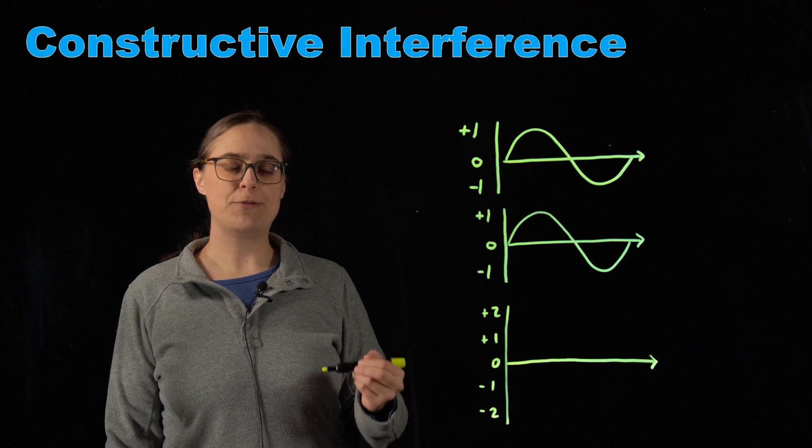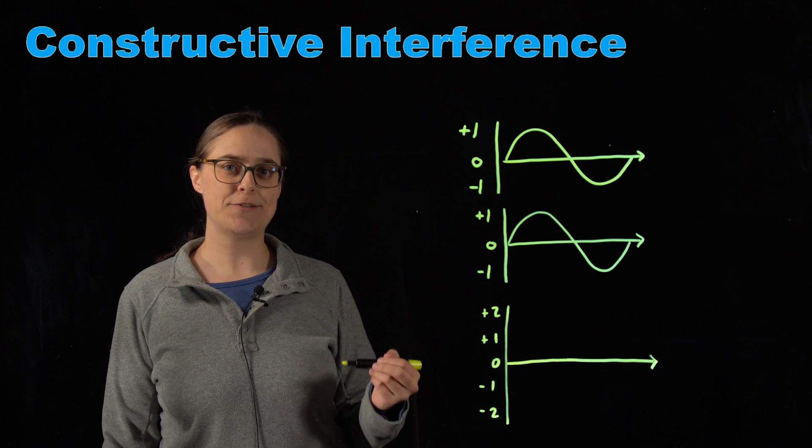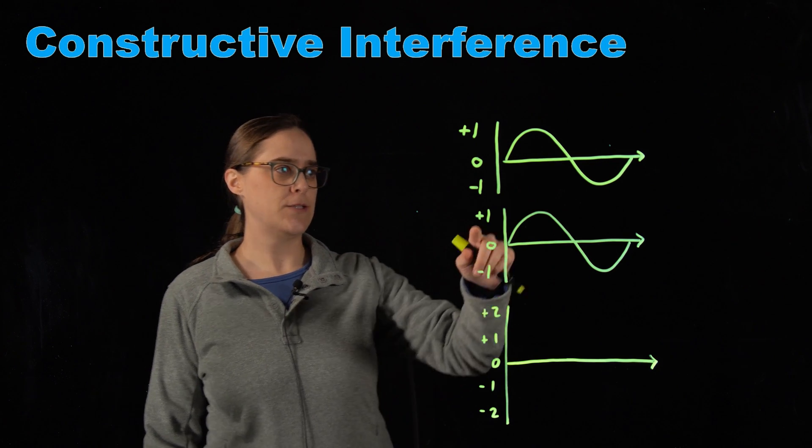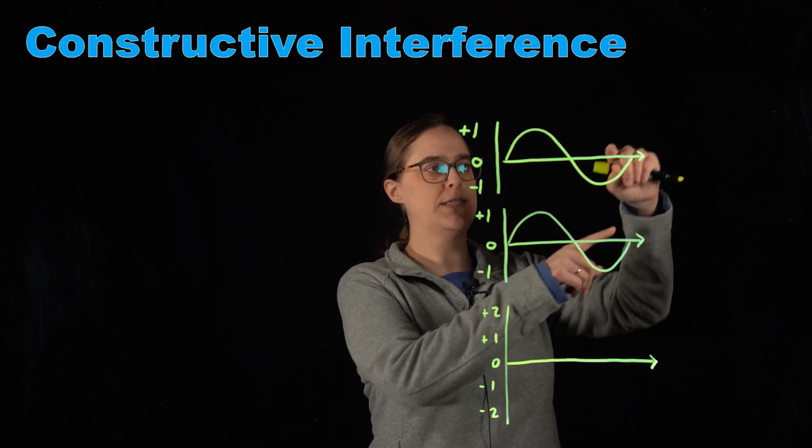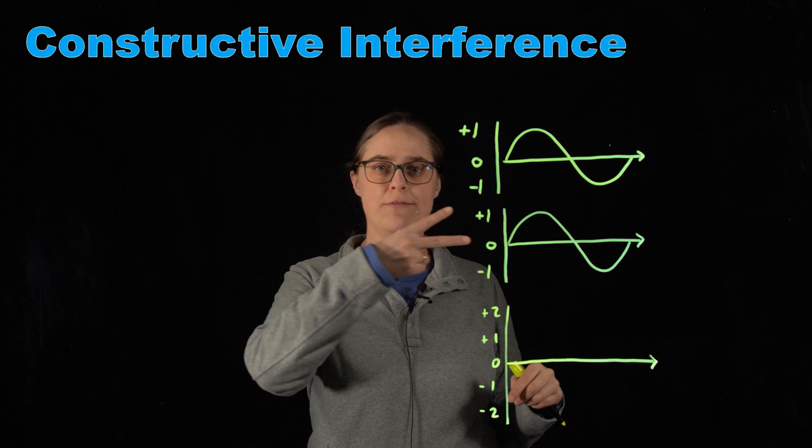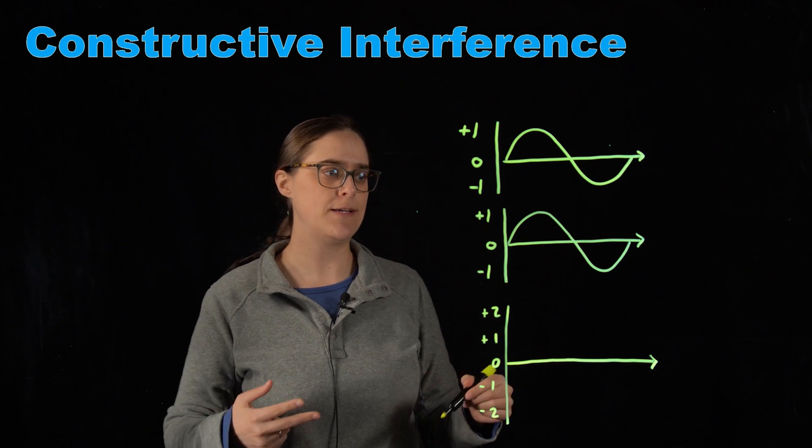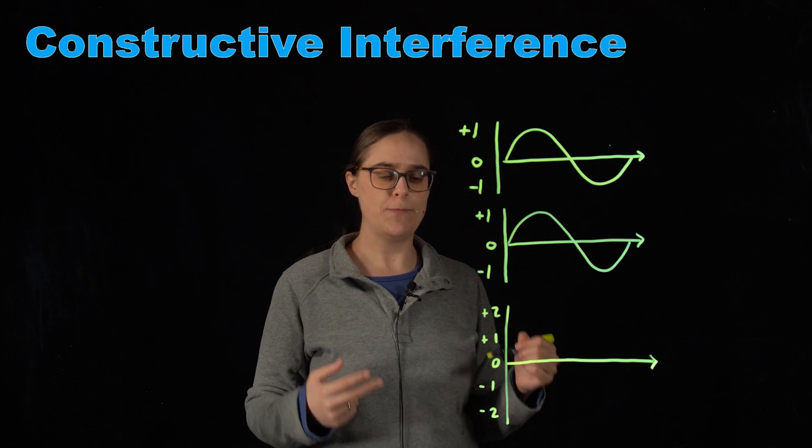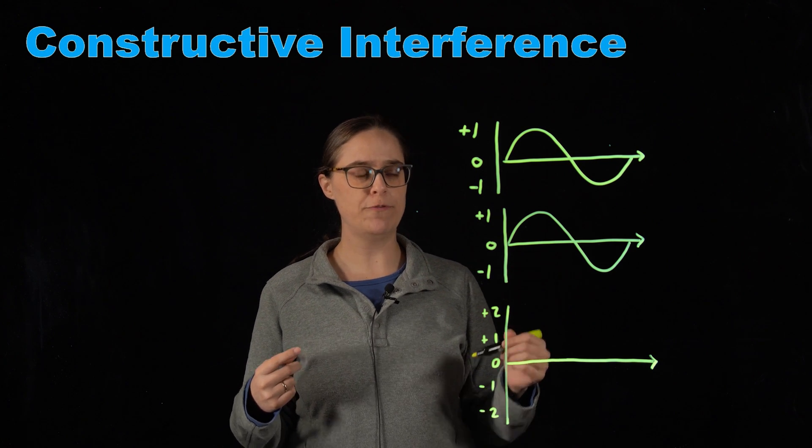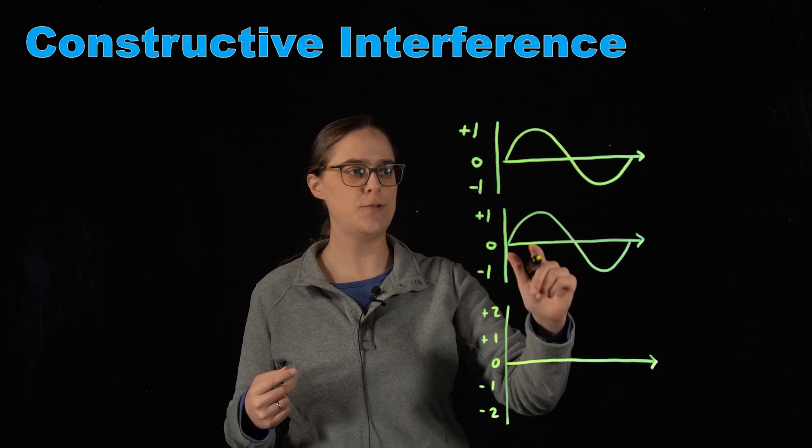First let's talk about the difference between constructive and destructive interference of waves. So here I have two waves, and let's imagine them traveling together in the same direction and at the same speed. The wave that we would actually be able to observe would be the sum of these two waves.